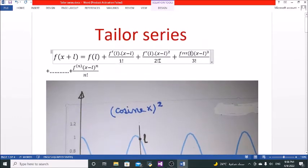over factorial 1 plus the second differential of the function at l, and that same distance x minus l all squared over factorial 2. Notice here, this is squared and this is to the power two, and this is 2 factorial.